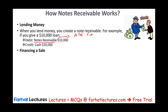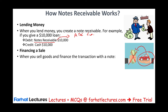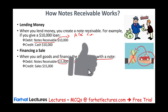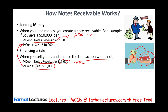Another way Notes Receivable is created is when you make a purchase. You go to purchase a car or piece of furniture and don't have the money, so you sign a note promising to pay in the future. When the company sells goods and finances the transaction with a note, they create a Notes Receivable. For example, they sold a car for $15,000 to ABC Company — they debit Notes Receivable and credit Sales.